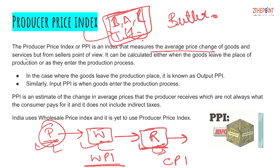The Producer Price Index, or PPI, is an index that measures the average price change of goods and services from the seller's point of view. If we look at CPI, it measures the changes in the price of goods and services from the consumer's point of view, because the retailer sells goods to the consumer like you and me. But the PPI measures the changes in price from the seller's or producer's point of view.